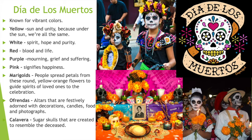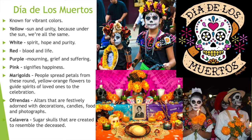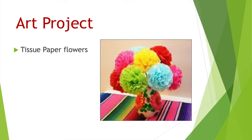The altars we talked about are called ofrendas and are adorned with lots of decorations. You'll see here a photo of an ofrenda for someone's loved one — there's a photo of the person who passed away, and in front of that you can see some of the pan de muertos, the delicious bread. There's a list of sources if you'd like more information, including coloring pages to make your own sugar skull. Our art project today, if you picked up a kit, is making your own tissue paper flowers to decorate, or to celebrate Día de los Muertos.